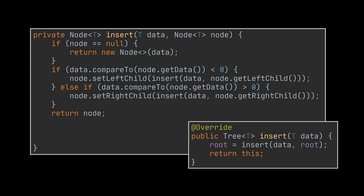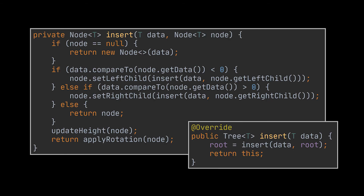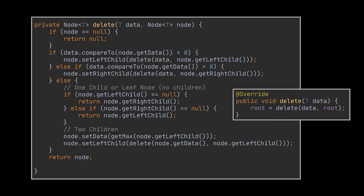The insert method looks exactly like the BST implementation but with a twist: at the end, after recursive calls, we add two checks — one applies the needed rotations based on the four scenarios discussed, and the second updates the height of the rotated node accordingly. The same two calls are added at the end of the delete operation, ensuring heights are always up to date and the tree remains balanced.